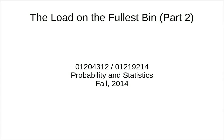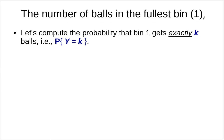Let's continue our discussion on the number of balls on the full bins problem. In the previous segment, the question was: we would like to compute the probability that bin 1 gets exactly k balls. And this is, if you recall, exactly why this is the binomial random variable.